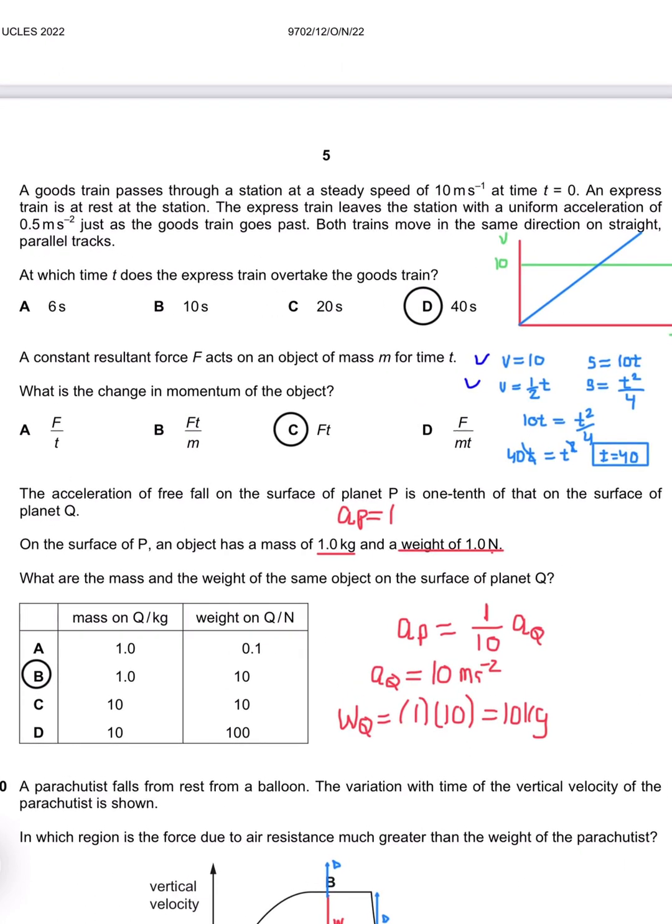Question 9: On the surface, an object has mass 1 kg and weight 1 newton, so the g of planet P is 1. What are the mass and weight of the same object on planet Q? According to the expression given, it is one-tenth of Q, so the acceleration of Q would be 10 meters per second squared, and weight of Q would be mg, which is 1 kg times 10 equals 10 newtons.